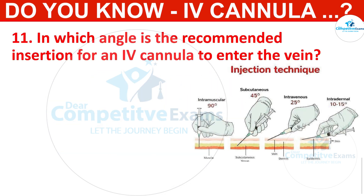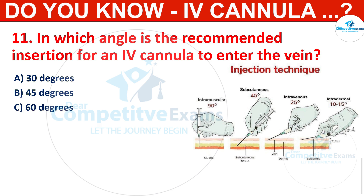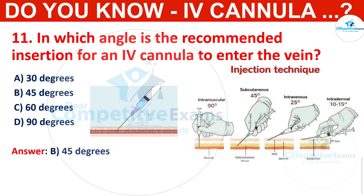Q11. In which angle is the recommended insertion for an IV cannula to enter the vein? Options: 30 degrees, 45 degrees, 60 degrees, or 90 degrees. The correct answer: inserting the IV cannula at a 45-degree angle allows for optimal vein entry.